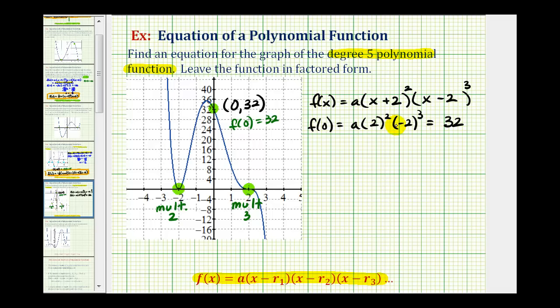Now we'll go ahead and simplify here and solve for a. Well two squared is four and negative two cubed is negative eight. Four times negative eight is negative thirty-two. So we have negative thirty-two a here equals thirty-two.